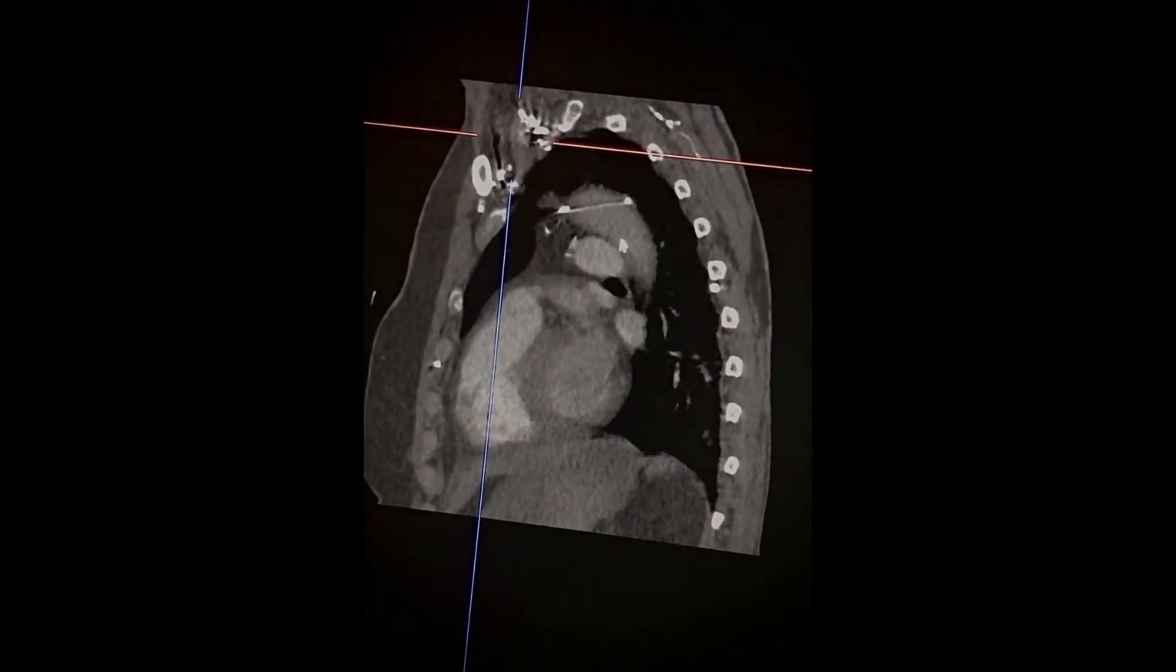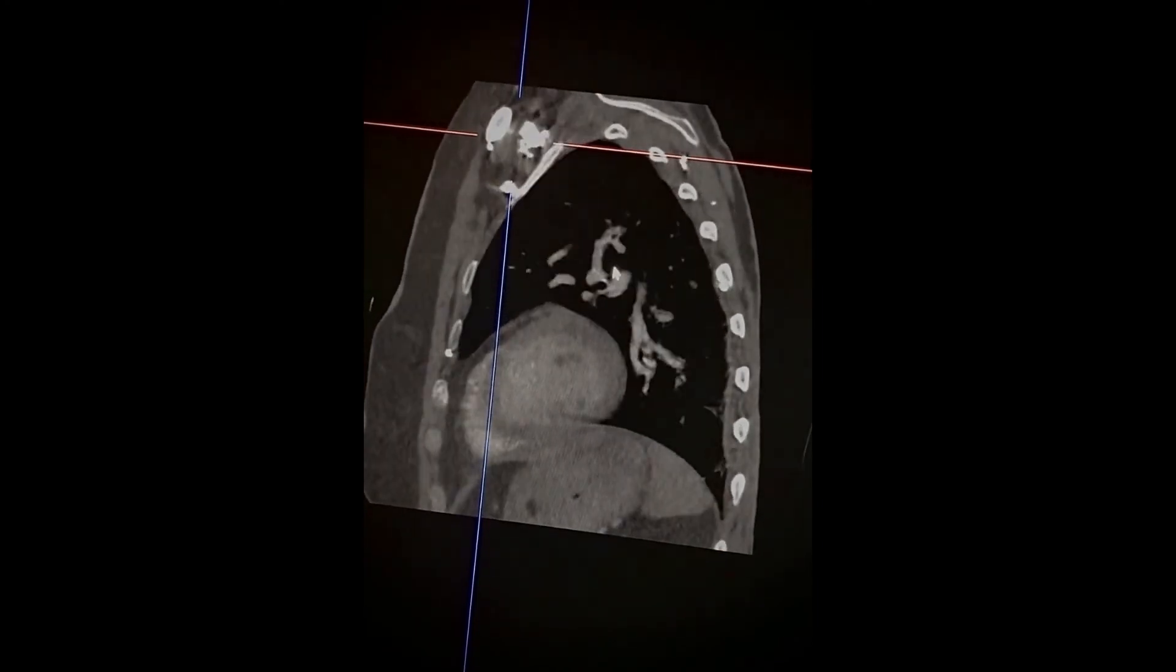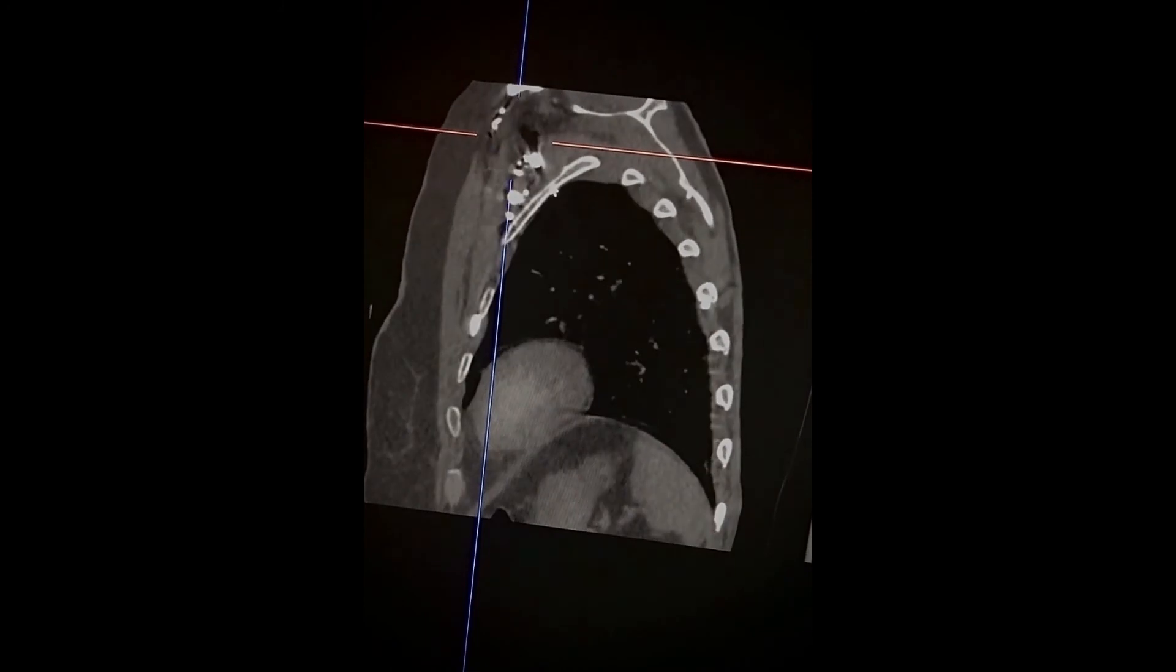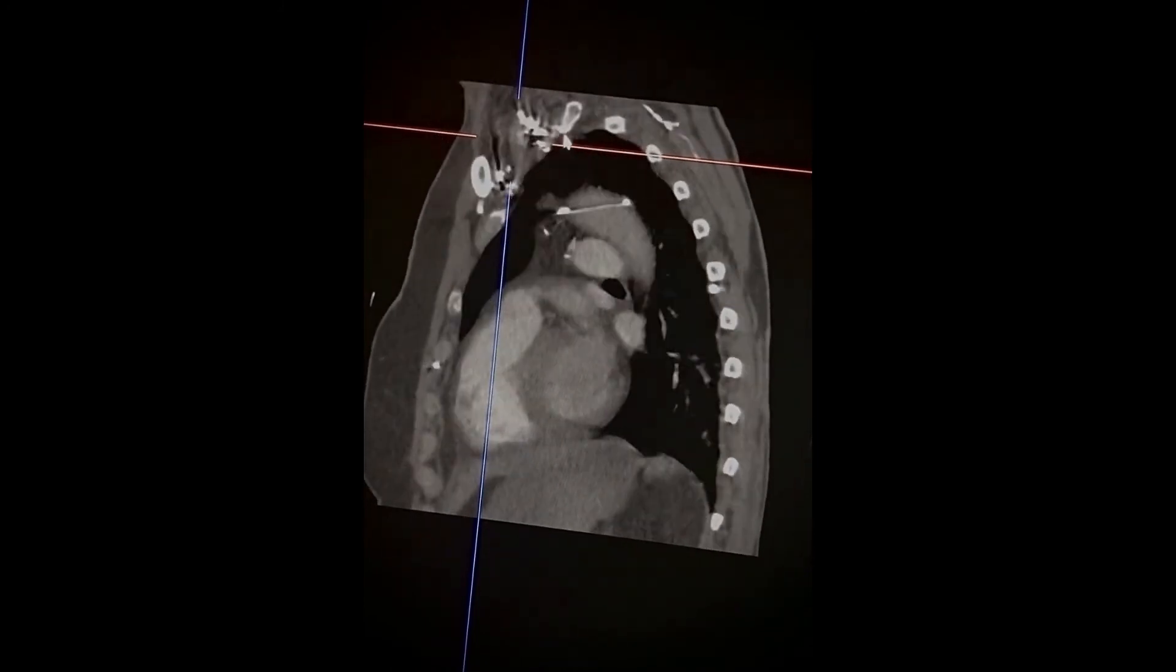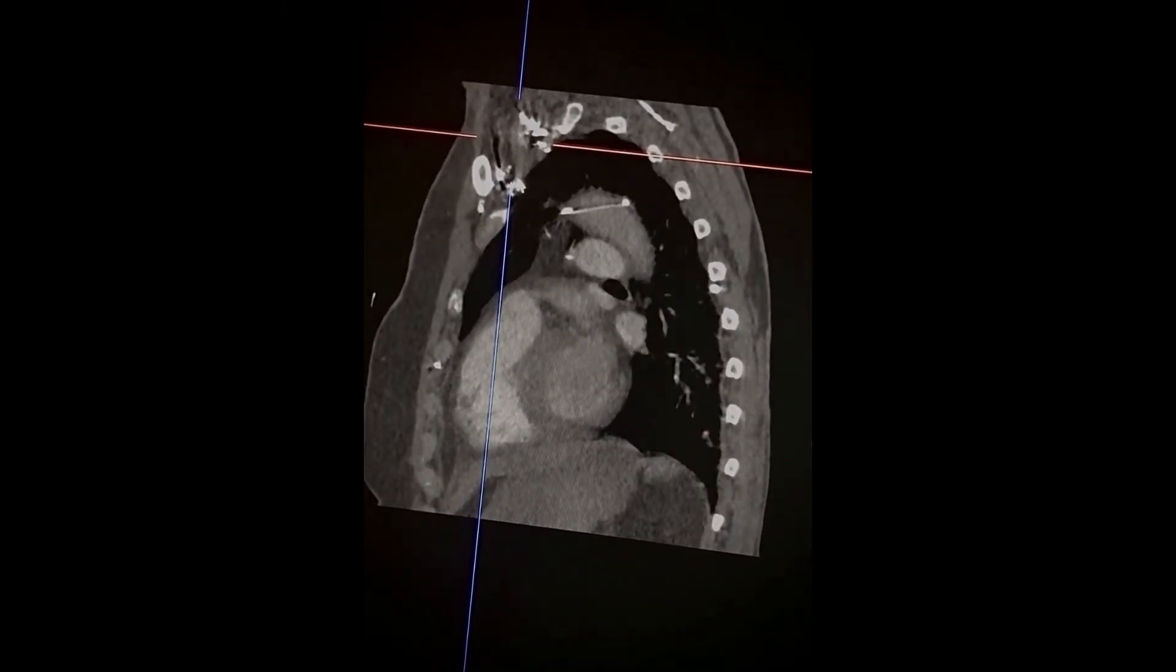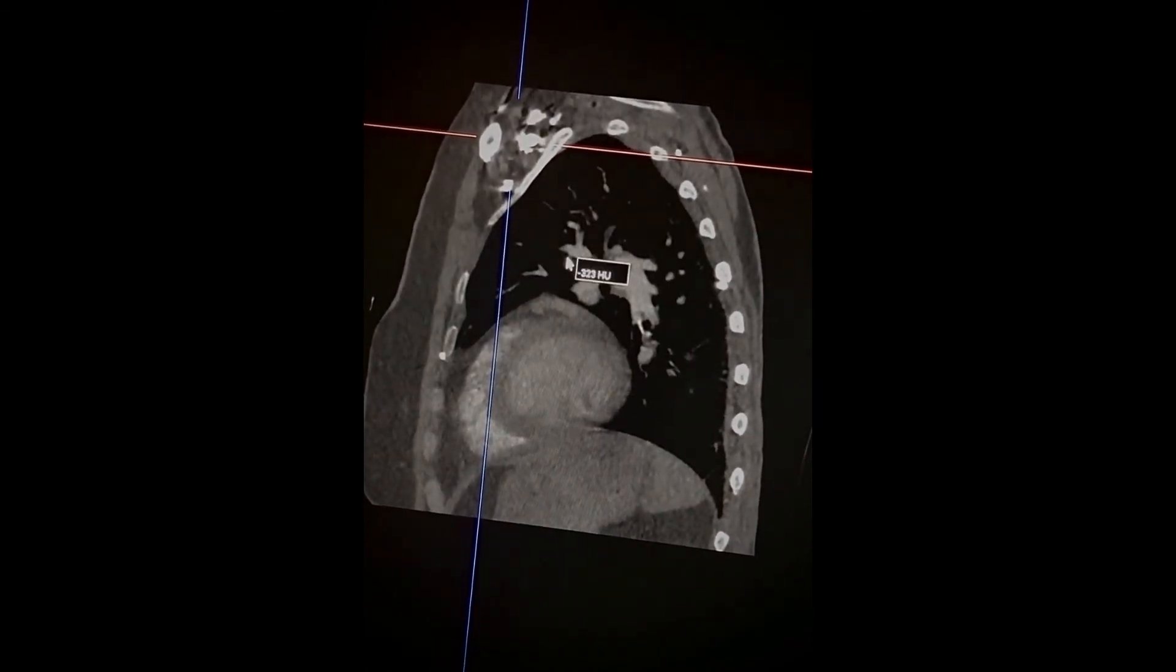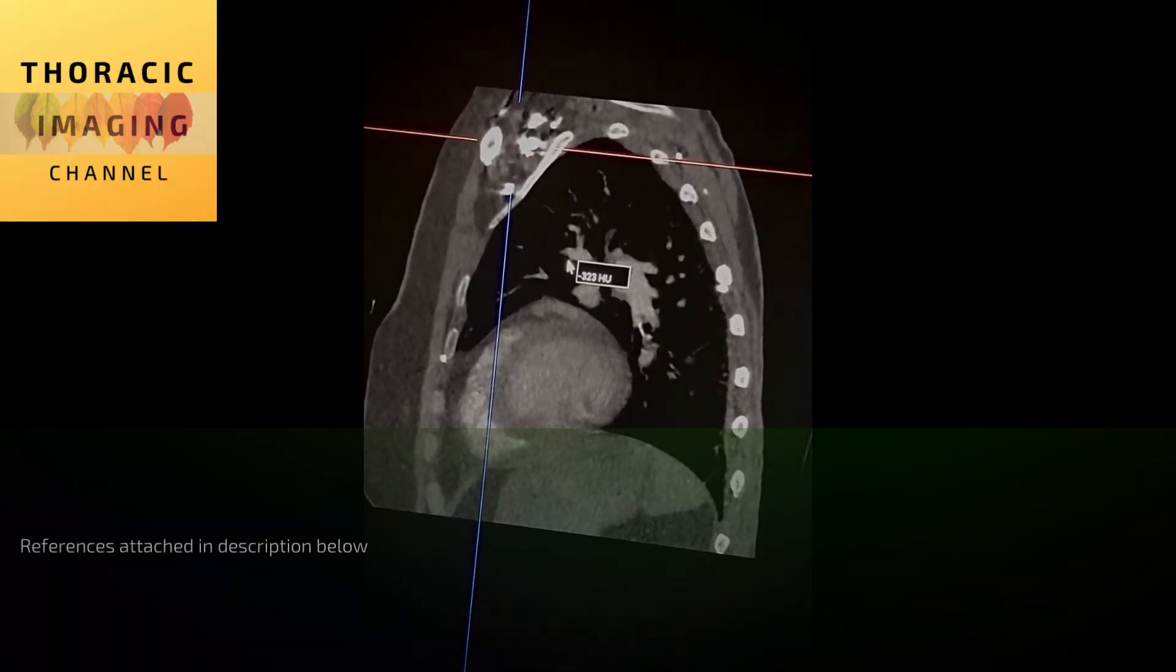In this case, it is most likely that this obstruction is due to a fibrous band or the orientation of the scalenus anterior and middle muscles against the first rib. References containing important links have been pasted below.